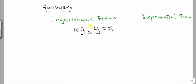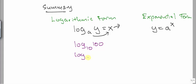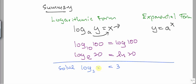Let's summarize what we have learned. An expression in exponential form can be expressed in logarithmic form — this can be read as log base a of y equals x. The a here is known as the base. To convert back to exponential form, y stays, a takes the base position, and x moves up as the power. We learned two commonly used bases: common logarithm with base 10, which can be written as log without a base, and natural logarithm, log base e, which is rewritten as ln. Lastly, to solve equations involving logarithm, we convert the logarithmic form to exponential form to find the unknown.